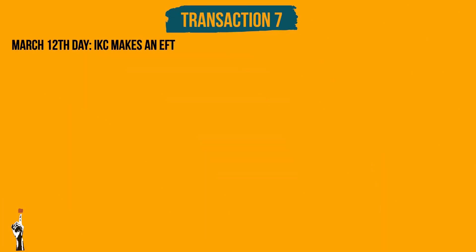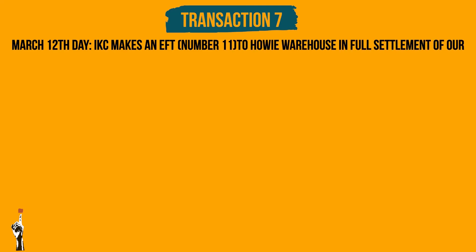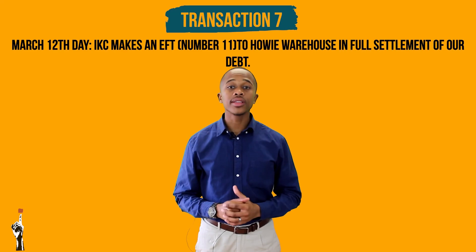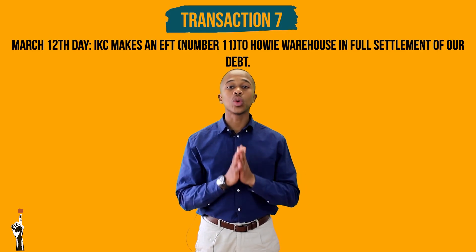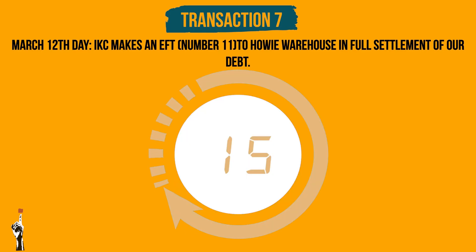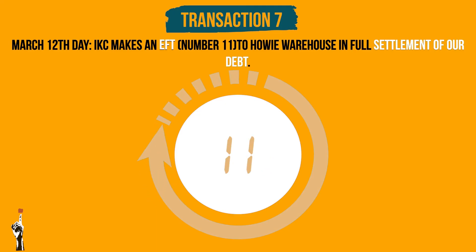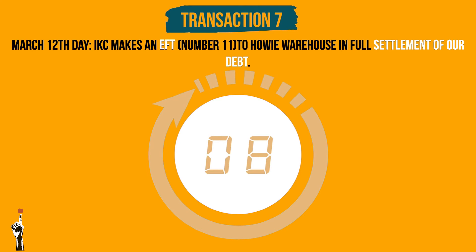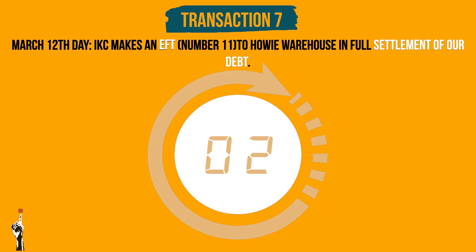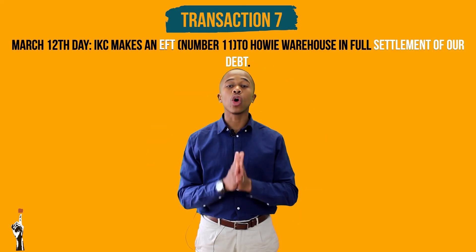IKC makes an EFT to Howie Warehouse in full settlement of their debt. Remember grade 9s, from the previous transaction, the debt was 6,000 Rand. Let's get the answer on the screen.